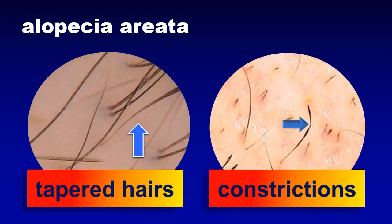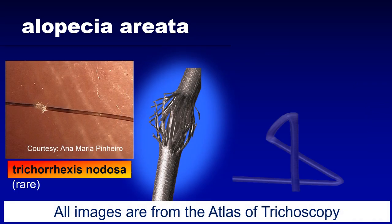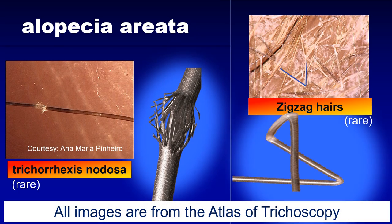These are images of typical tapered hairs and typical Pohl-Pincus constrictions in patients with alopecia areata. Talking about the constrictions, it is extremely important to not misdiagnose monilethrix as alopecia areata, because this may lead to very inadequate treatment decisions. Sometimes a predominant feature in the patient is a non-specific feature such as trichorrhexis nodosa or zigzag hairs, which may be present in patients with alopecia areata.